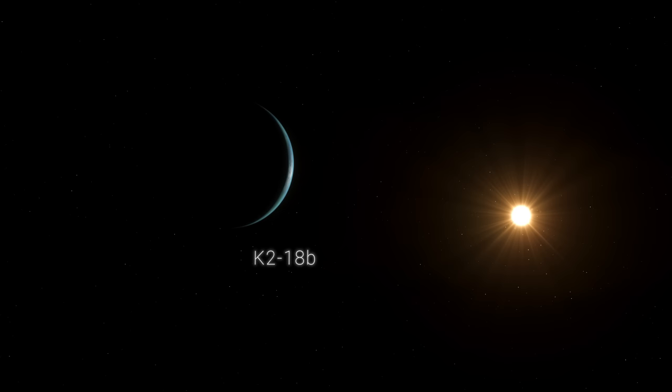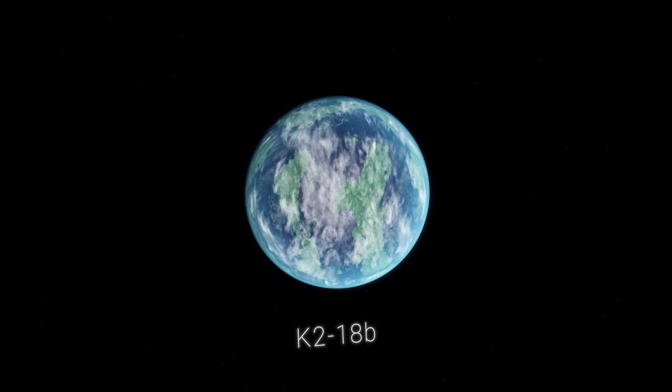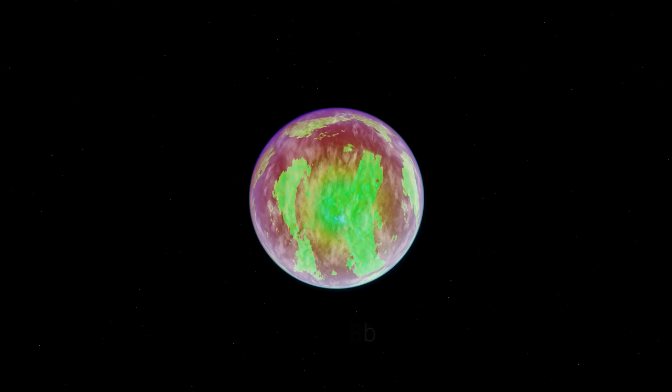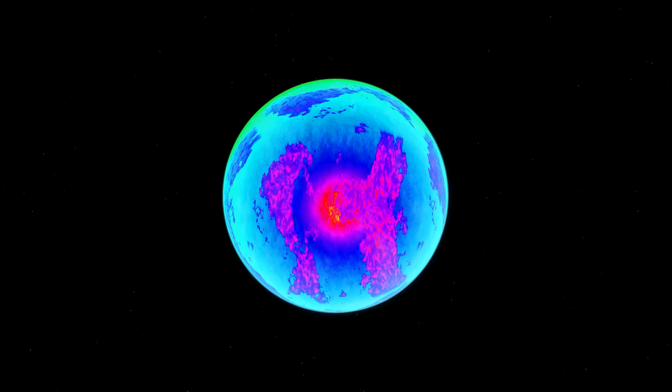Meet K2-18b, a distant exoplanet that has suddenly found itself at the forefront of astrobiological research. Why? Because James Webb discovered something unusual in its atmosphere, something that could potentially signal the existence of life.